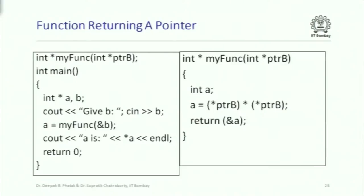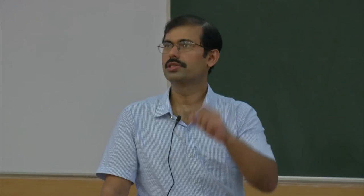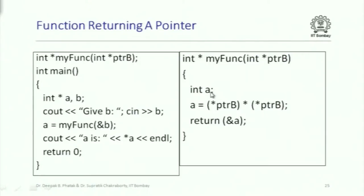Can a function return a pointer? Yes, but you need to be careful. For example, here is a function that has a local variable a and returns its address. That local variable resides in the function's activation record on the stack segment. As long as the function call is active, ampersand a is a legitimate address. But the moment the function returns, that activation record is popped off the call stack, so the space allocated for a is freed — and the address of a no longer has a meaningful value.